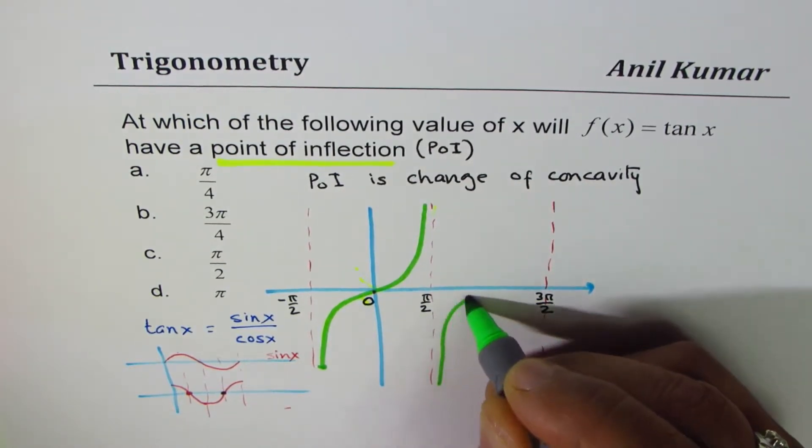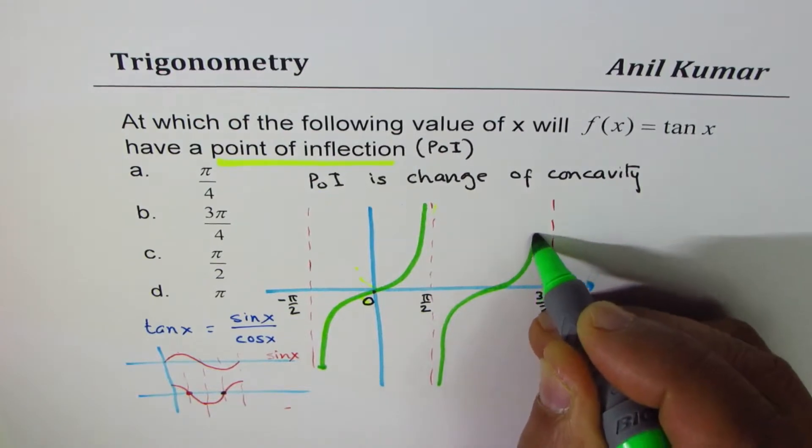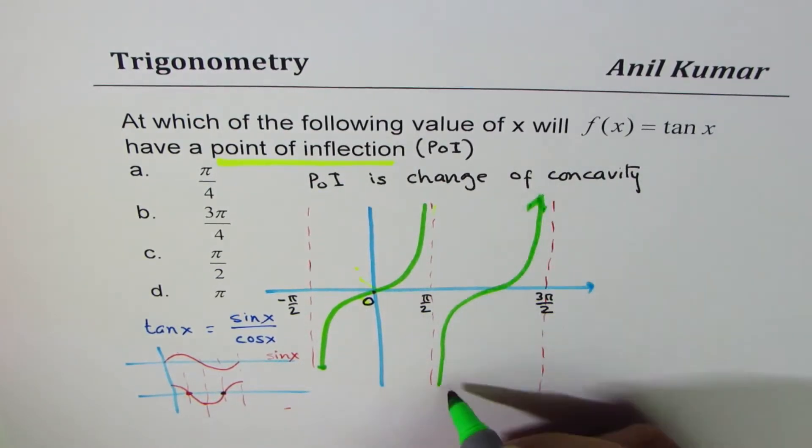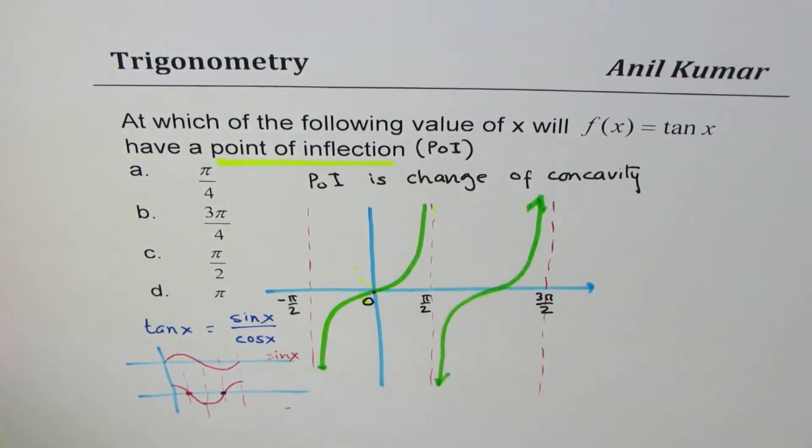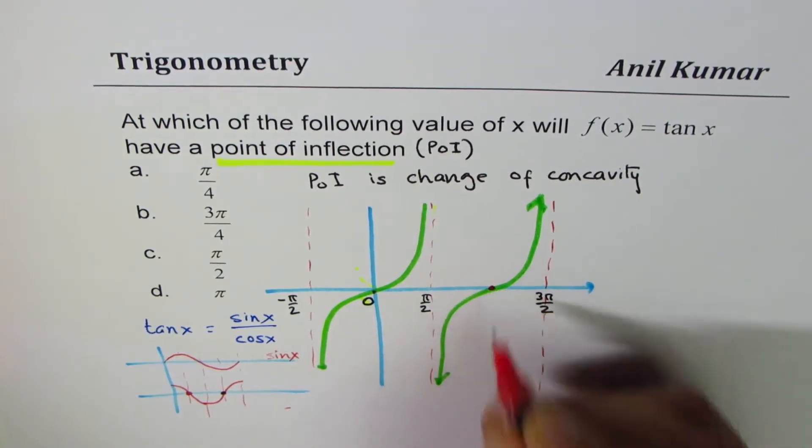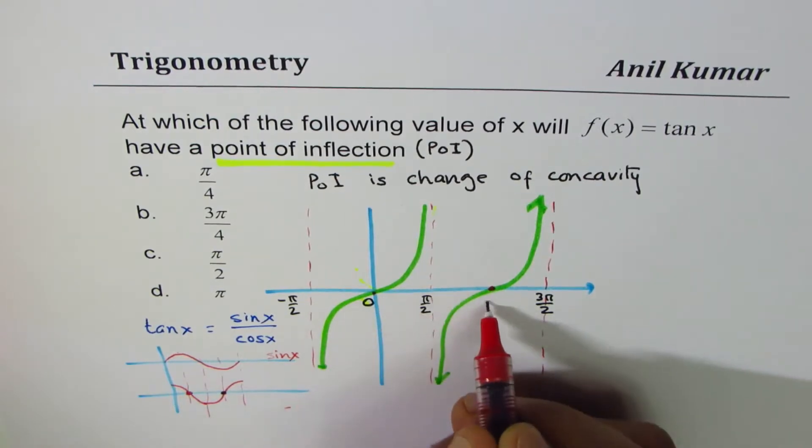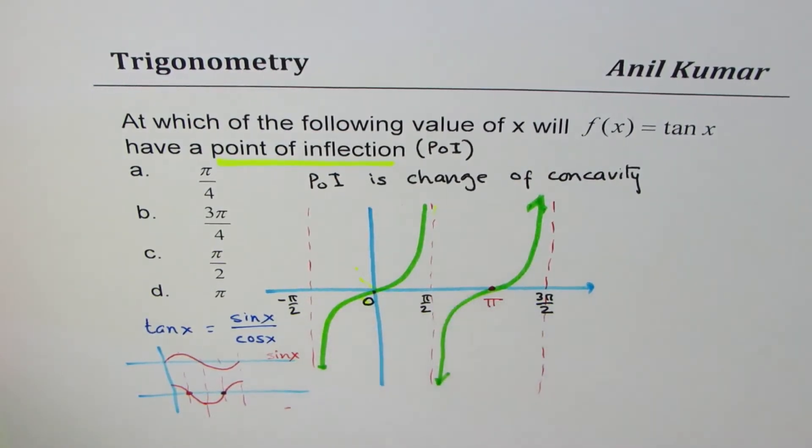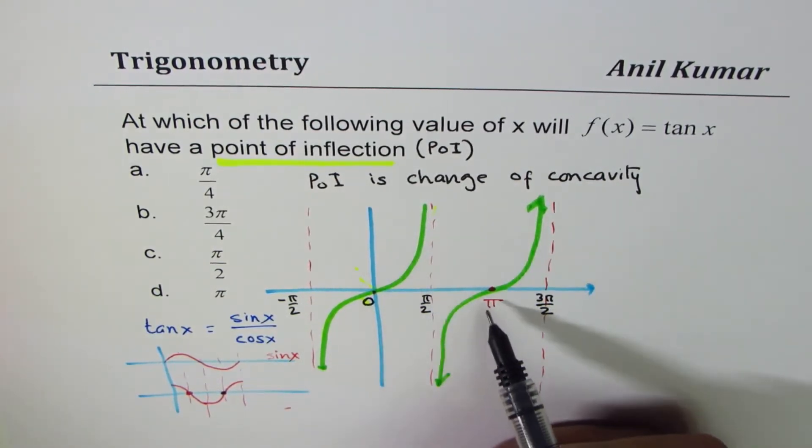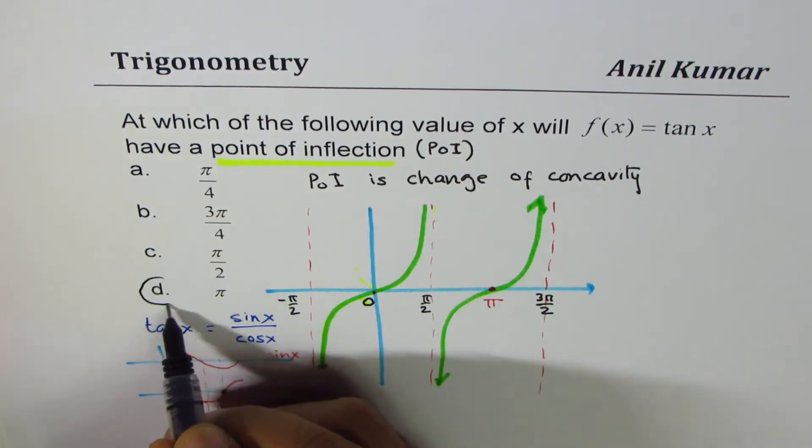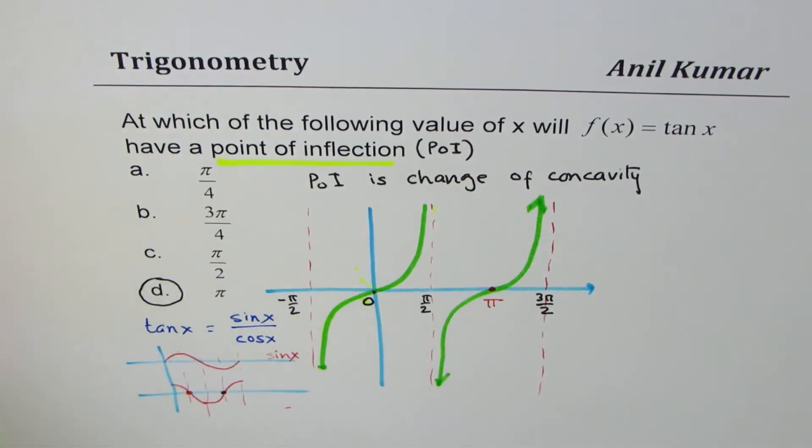So the next - now this function repeats, right? So the tan function will be kind of like this. The question is to find this point of inflection. Now this one happens to be at an interval of π, so this happens to be at π. That is your answer.